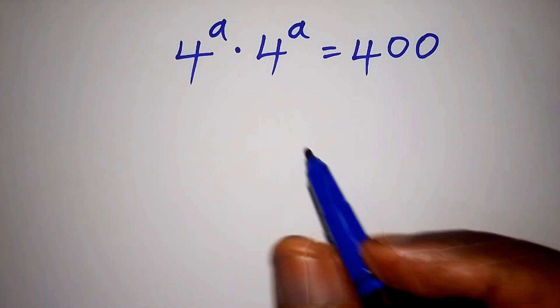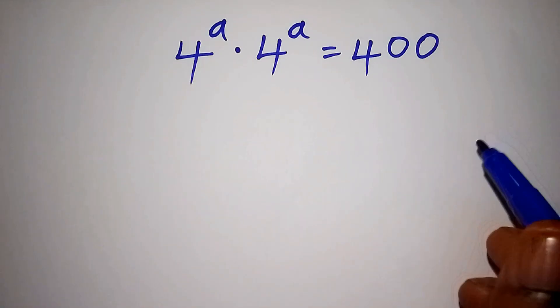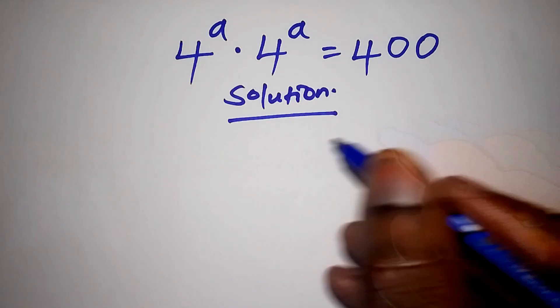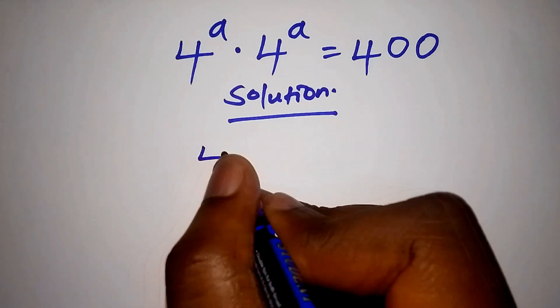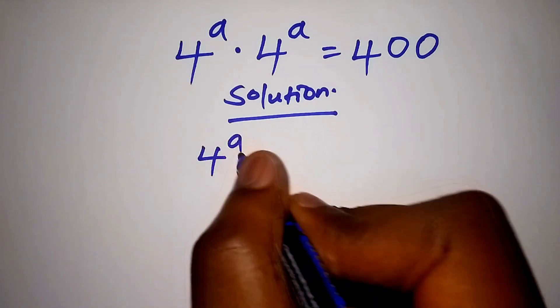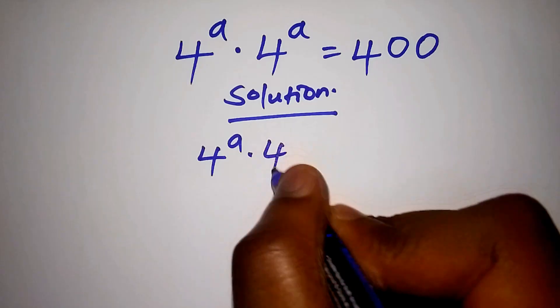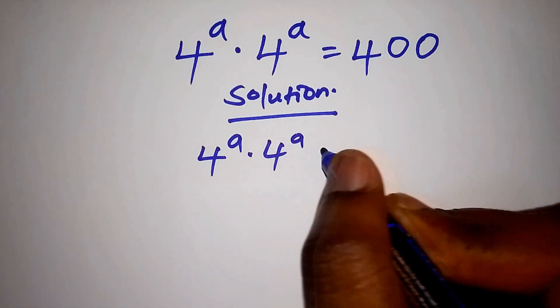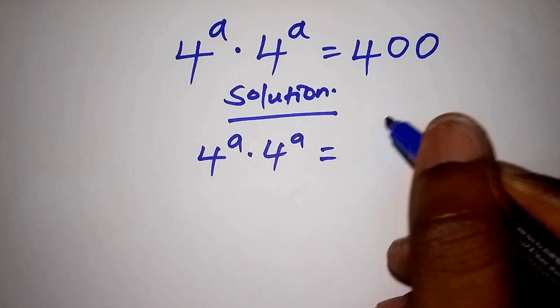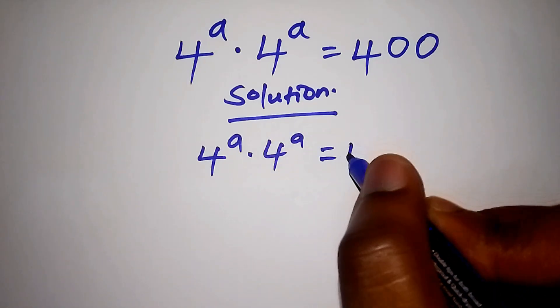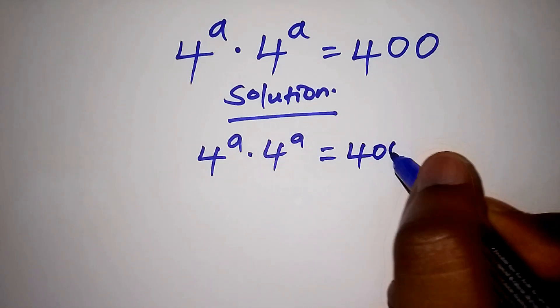Welcome, let's work out this beautiful exponential equation. 4 to the power of A multiplied by 4 to the power of A is equals to 400.